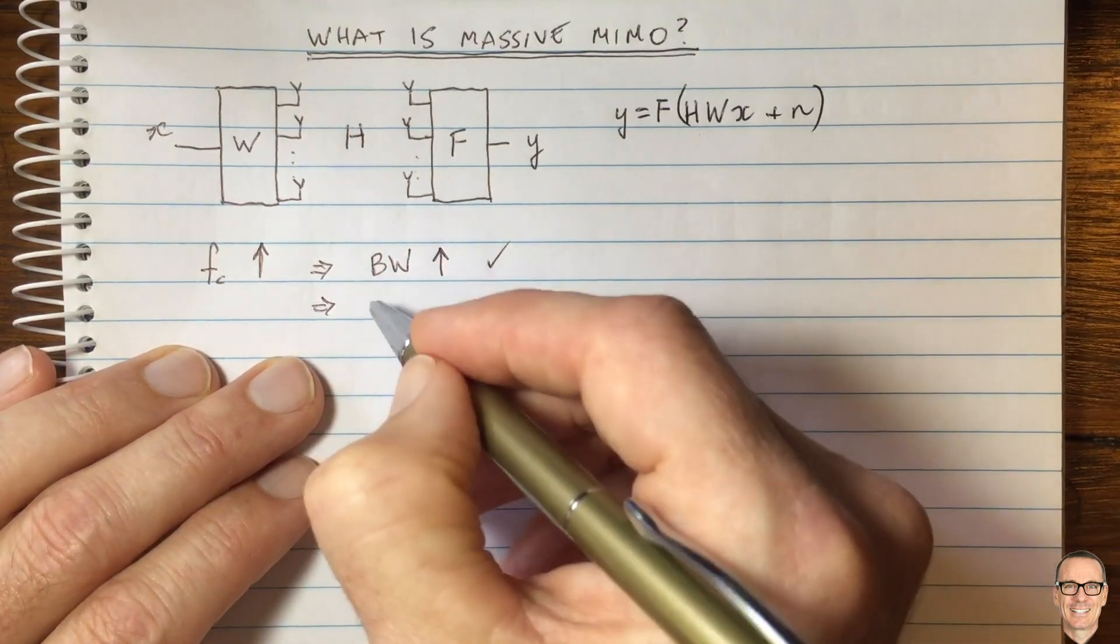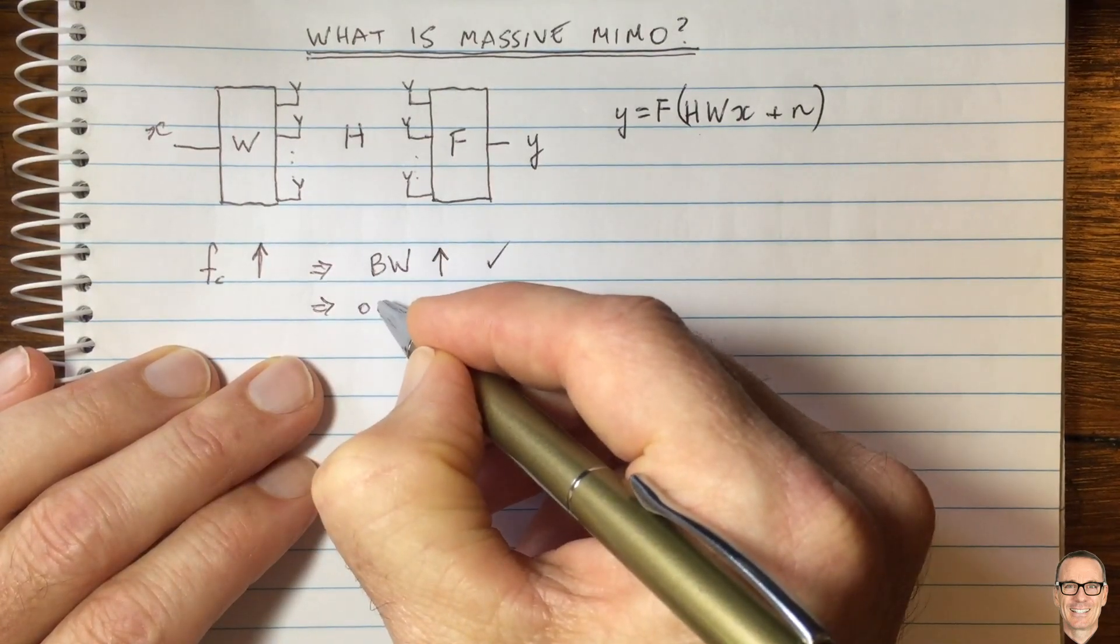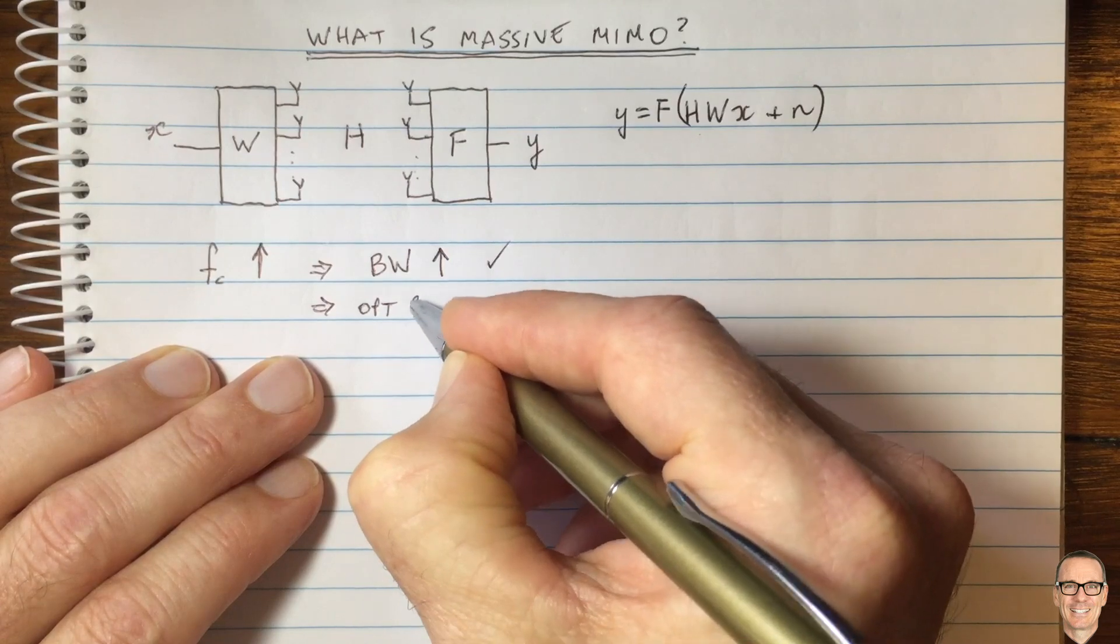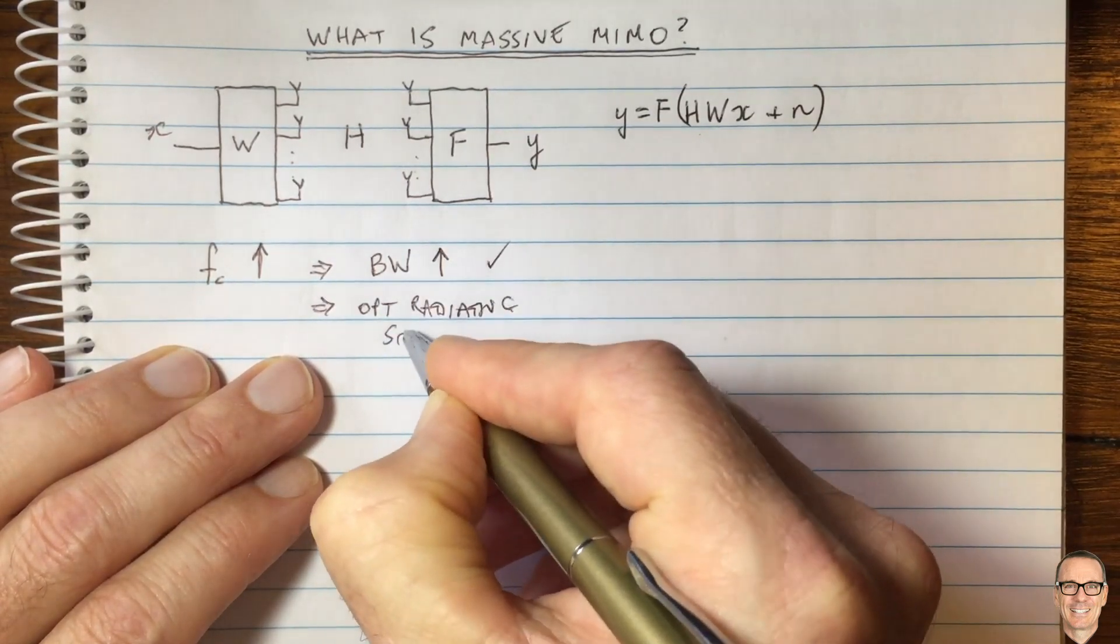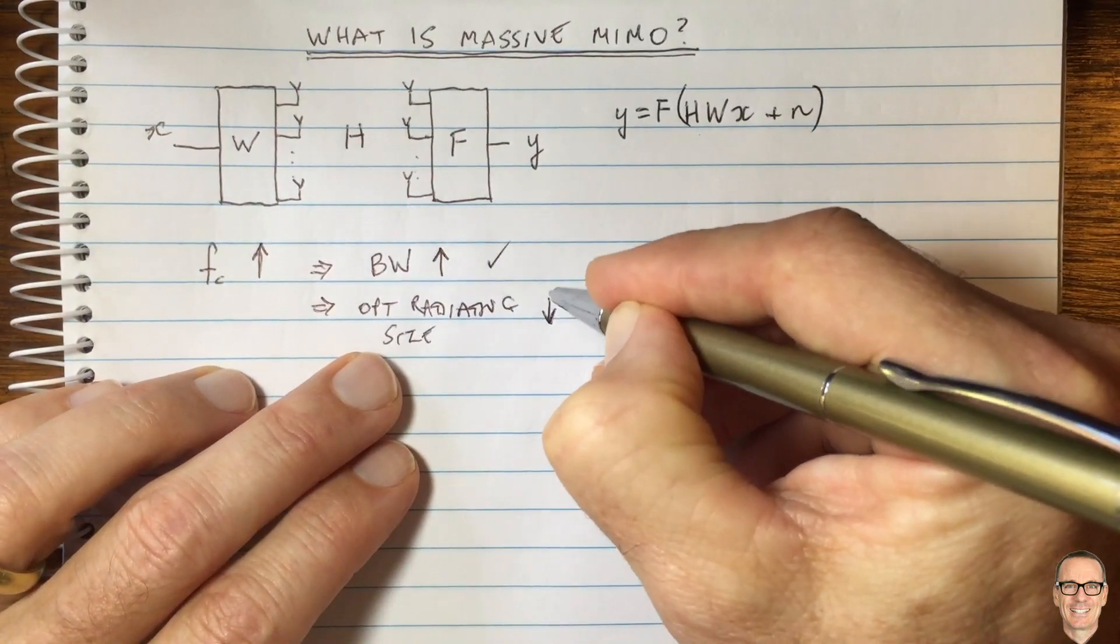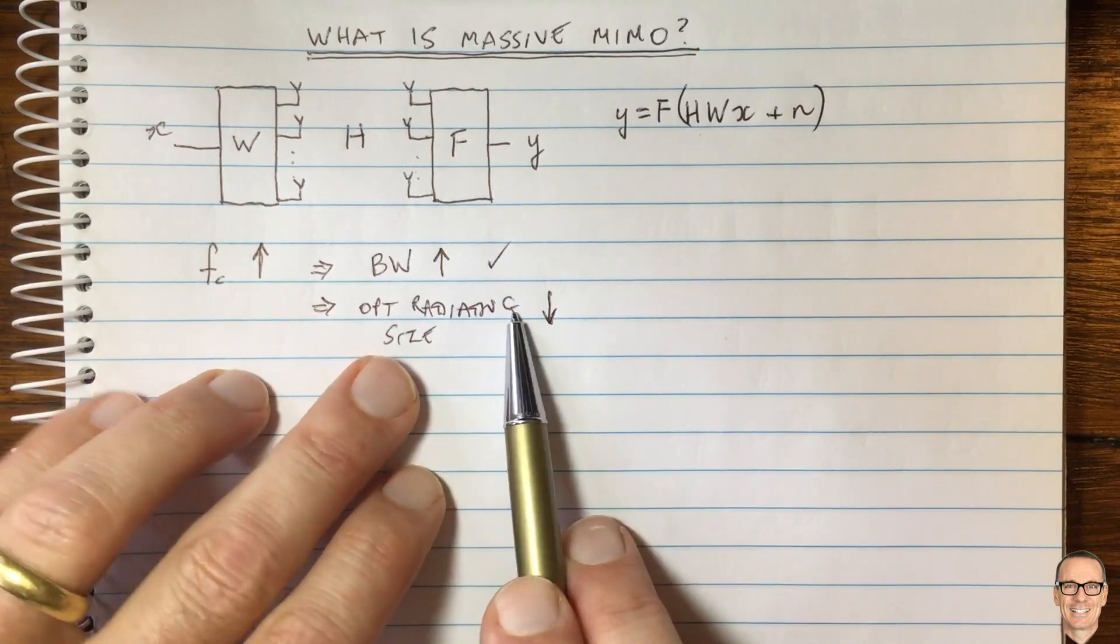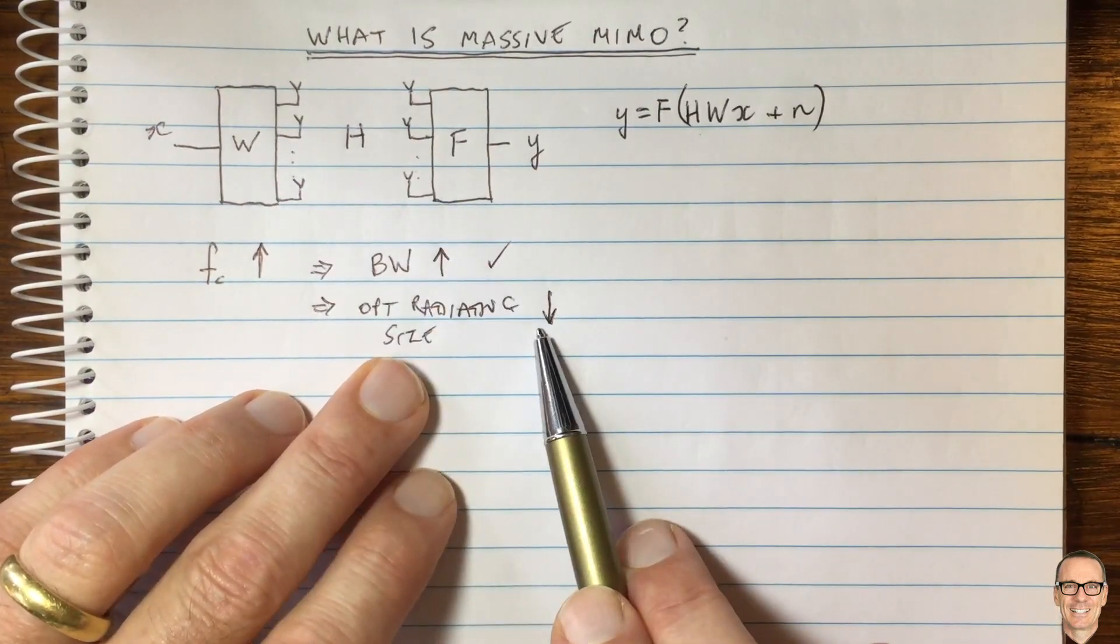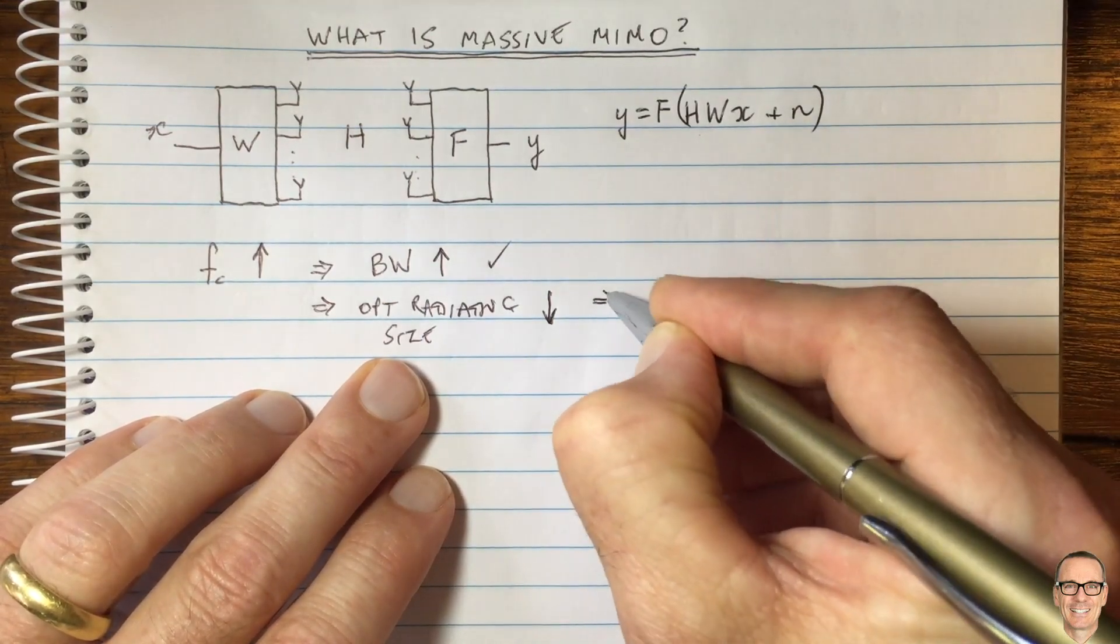As the frequency goes up, the optimal radiating size of an antenna element comes down because it's inversely proportional to the frequency. The optimal radiating size of each of these antenna elements comes down, which means we're dealing with smaller antennas.